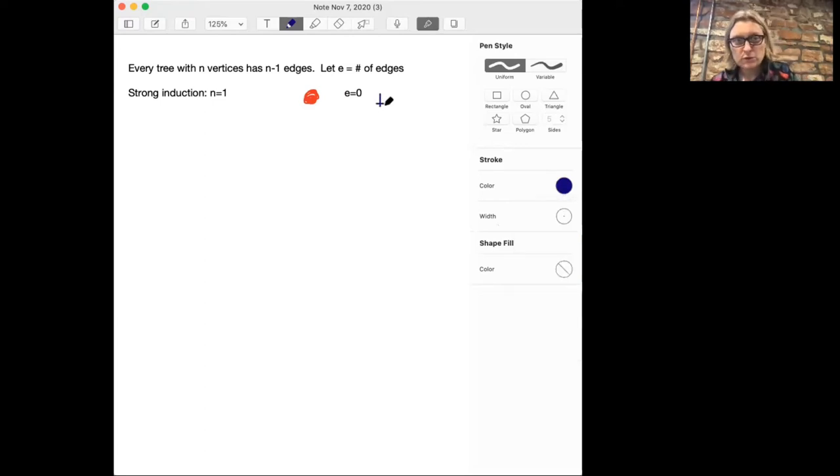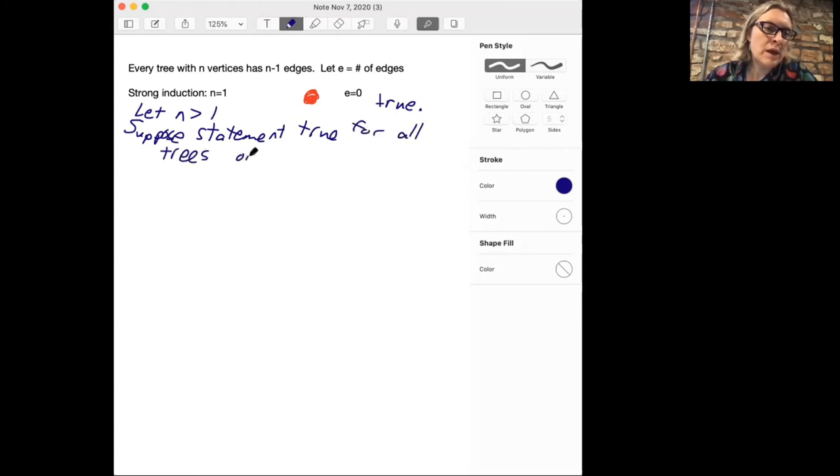Now we're going to start working with strong induction. Remember what strong induction says is that we're going to suppose the statement is true. We're going to let n be some number bigger than one. We're going to suppose the statement is true for all trees on k vertices if k is less than n. We want to show that it's true for trees on n vertices.